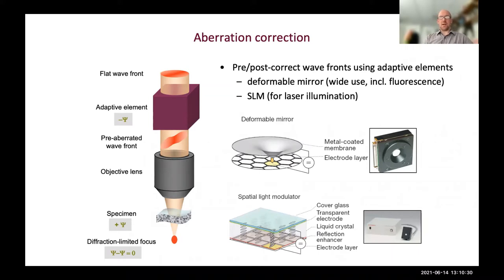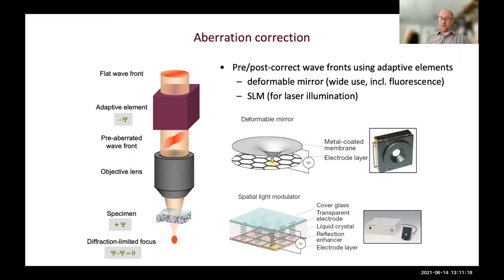We also use liquid crystal spatial light modulators, which work by using electrodes to change the state of liquid crystal materials, effectively exhibiting a different refractive index at each pixel. This allows us to control the spatial pattern of the phase of reflected light. These tend to be best used in laser illumination paths because they require polarized light for operation and have more chromatic effects. For a two-photon microscope, where we only need to think about the quality of light on the way in, a spatial light modulator is very commonly used.